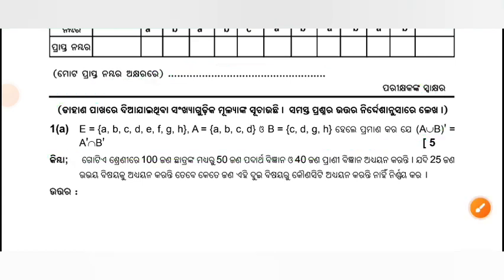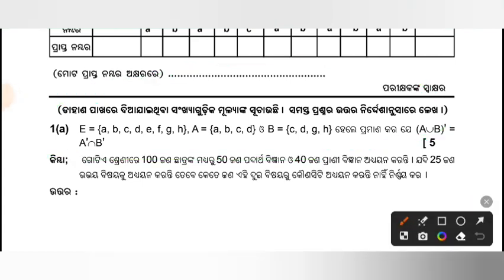Now E is equal to A, B, C, D, E, F, G, H, E. A is equal to A, B, C, D. B is equal to C, D, G, H, E.